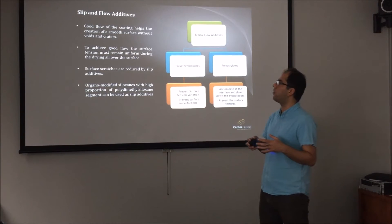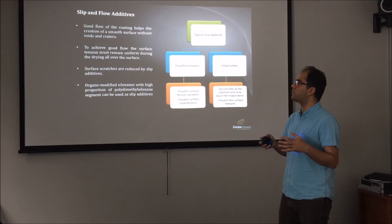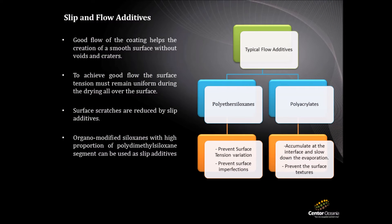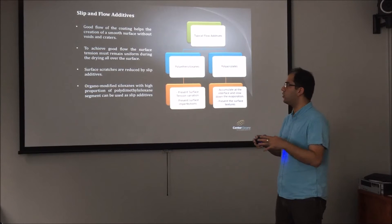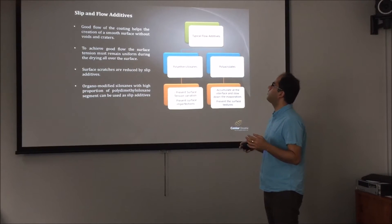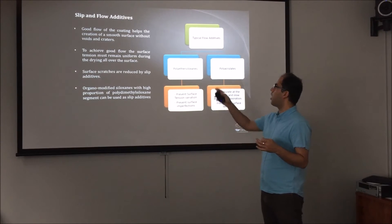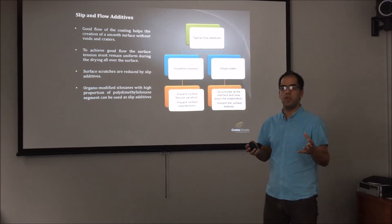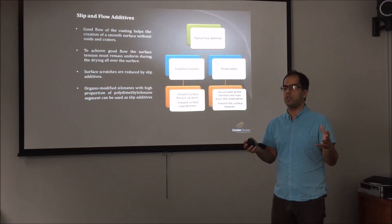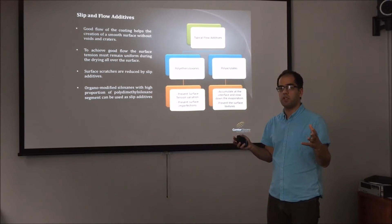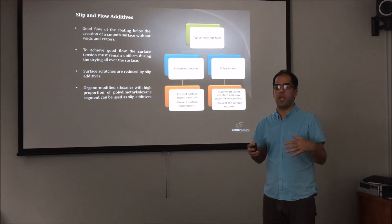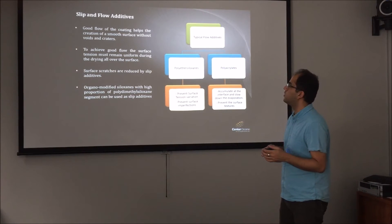The next additive is slip and flow additives. Good flow of the coating helps create a smooth coating around the seeds. Some additives are added that change the flow behavior so the final coating becomes very smooth. Typical flow additives used in seed coating applications are polyacrylates and siloxanes. They help create a smooth coating around the seed, which enhances seed performance and reduces scratches, improving the abrasion resistance of the seed coating.